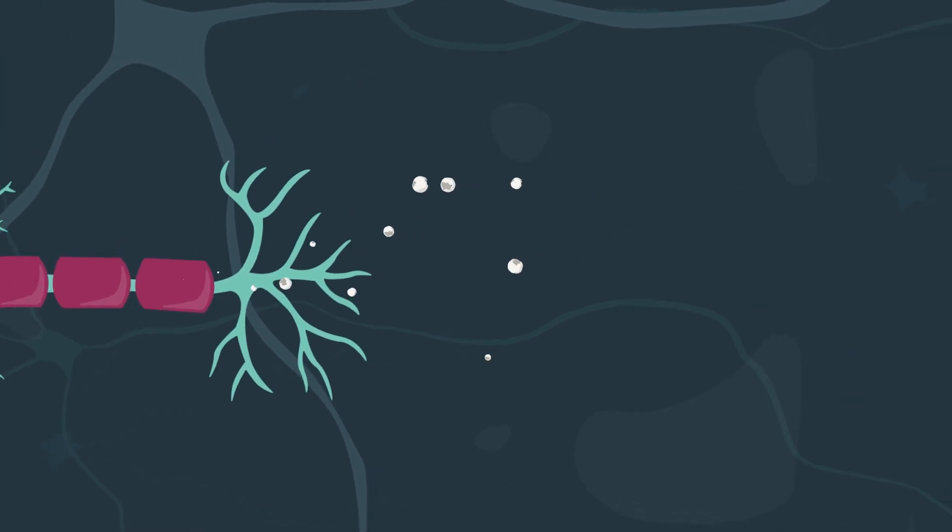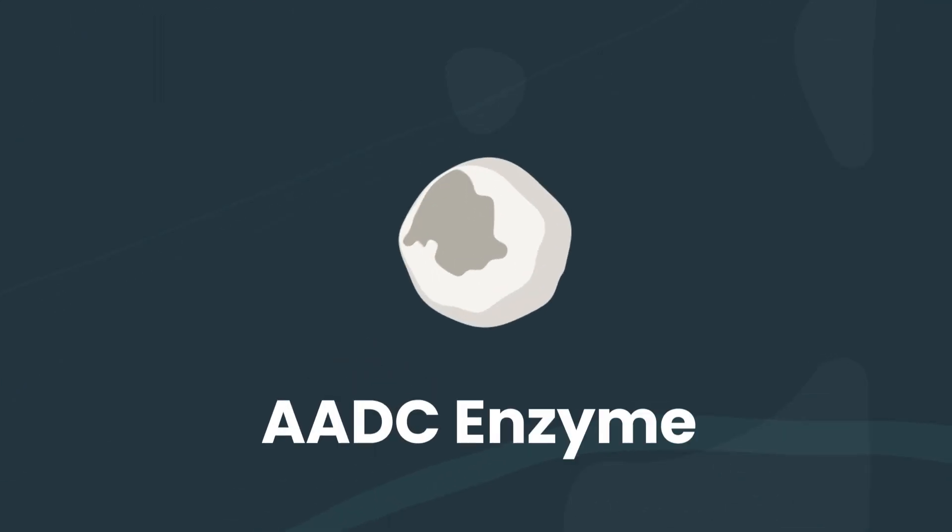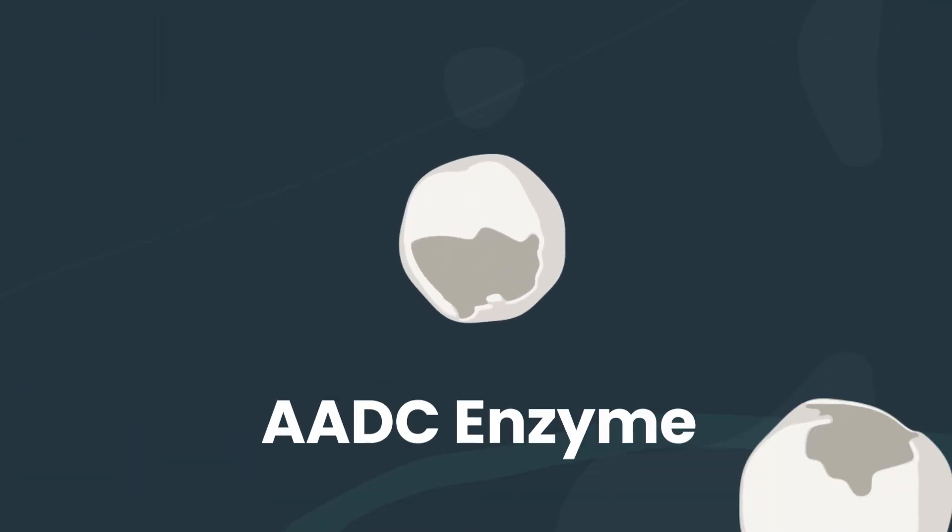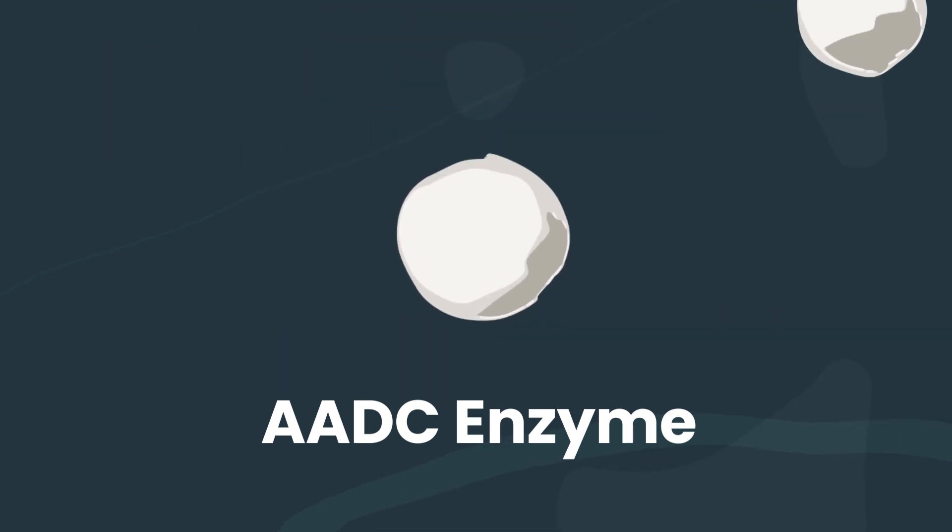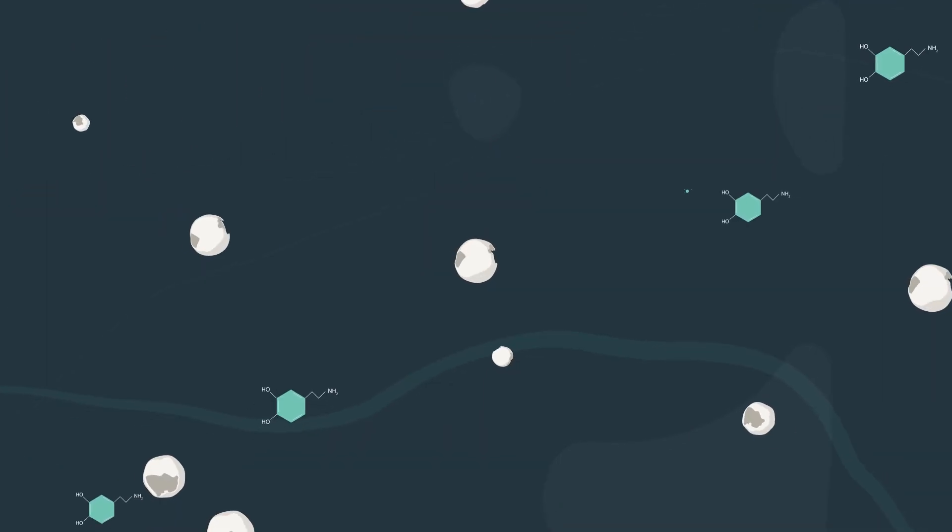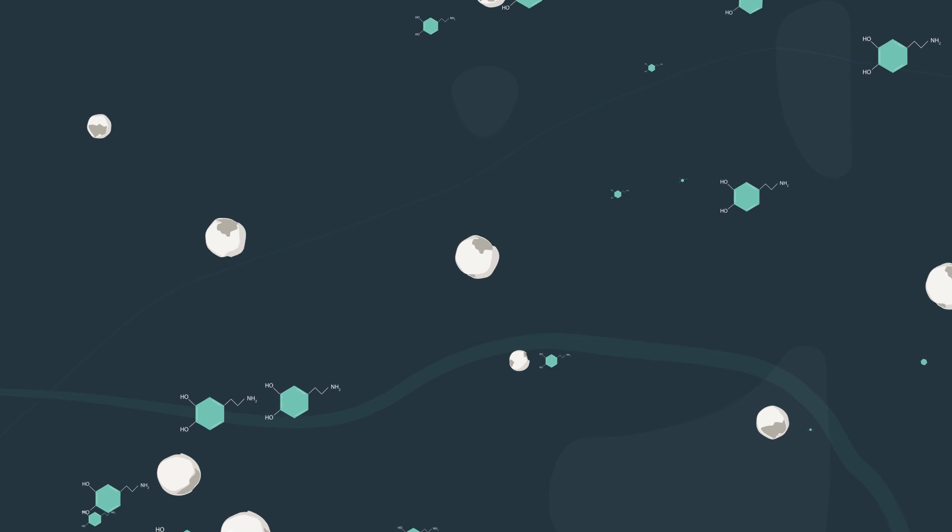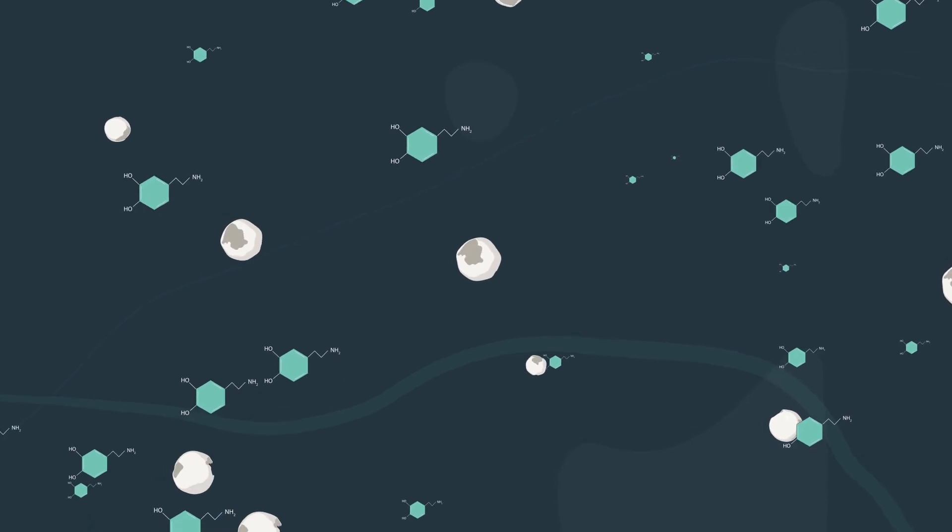One gene therapy being studied aims to program neurons to produce an enzyme called AADC by adding a functional DDC gene to the brain cells. By the way, enzymes are molecules that speed up chemical reactions in our body.